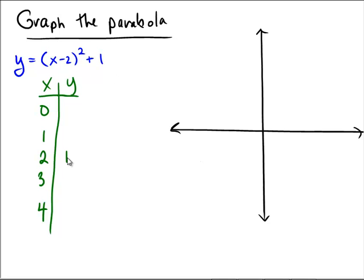Now let's plug in the number 3. 3 minus 2 is 1, 1 squared is 1, and 1 plus 1 is 2. Now let's plug in the number 4. 4 minus 2 is 2, 2 squared is 4, and 4 plus 1 is 5, so we get the number 5.